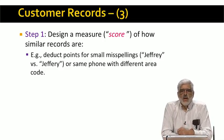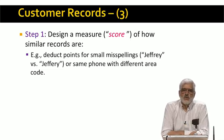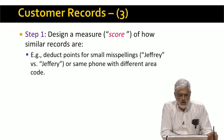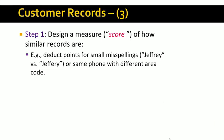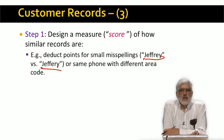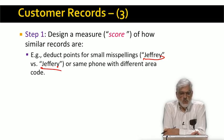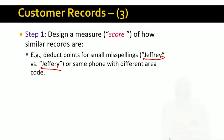For example, if the last names were the same but there was a small spelling difference in the first names, then the score for the name would be 90. If the last names were the same but the first names were completely different, the score for the names would be 50.